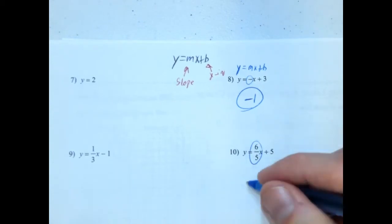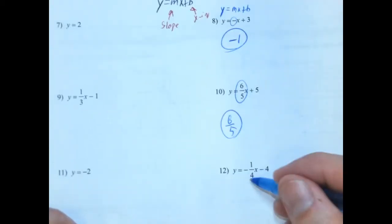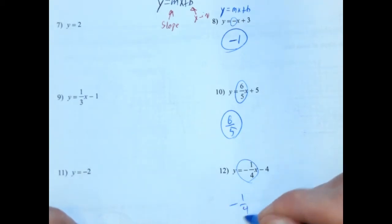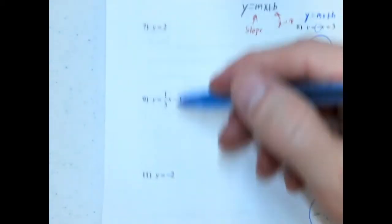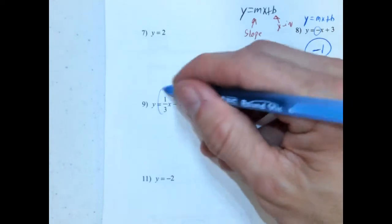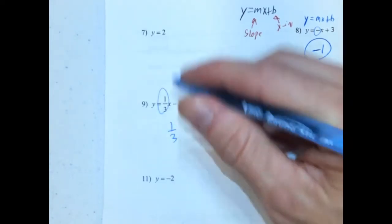Here we're going to go 6 fifths. That's our rate of change. So 6 fifths. Pretty straightforward here. This is going to be negative 1 fourth. So negative 1 fourth. These two are different. We're going to go over those in a moment. This is 1 third, so rate of change is 1 third.